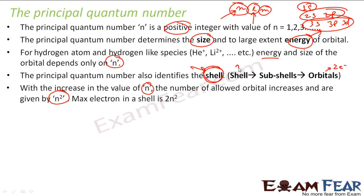So for a shell n, the number of orbitals is n². And subshells are also n. For a shell n, there are n subshells, n² orbitals, and 2n² electrons in that, because one orbital will have 2 electrons.